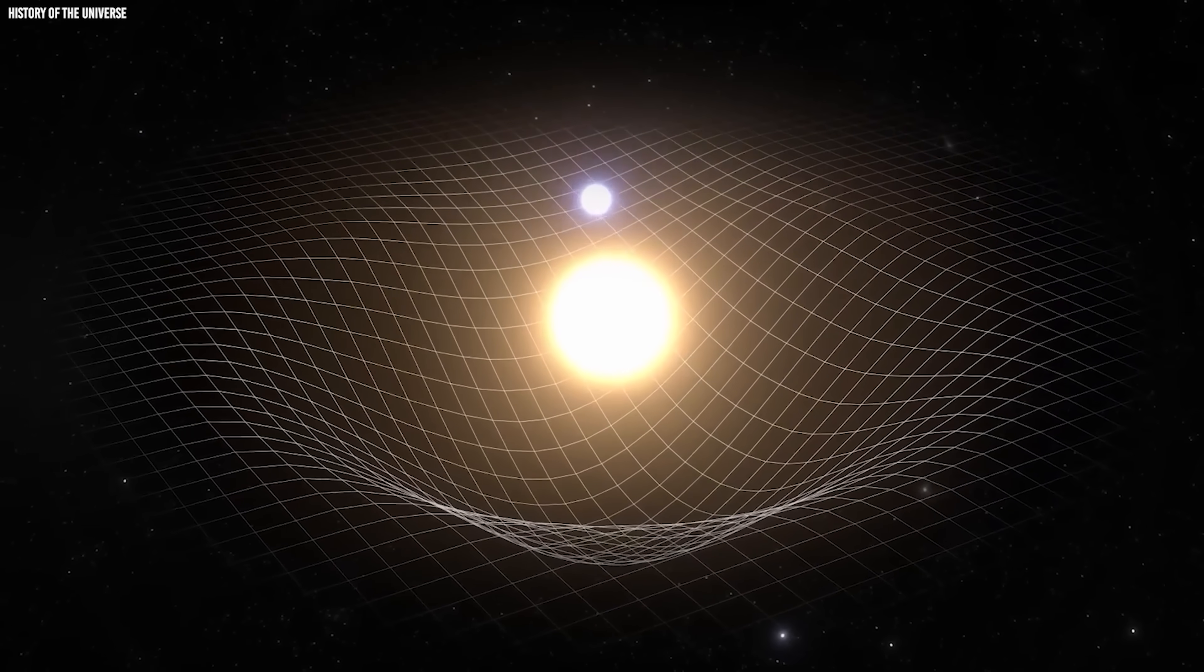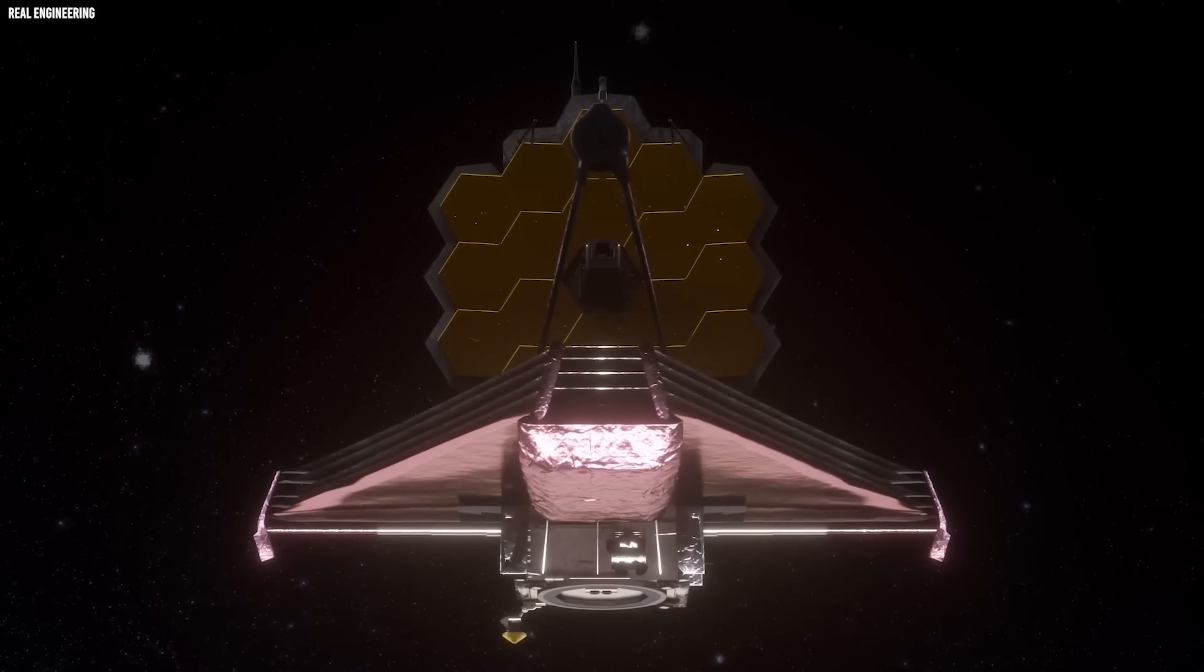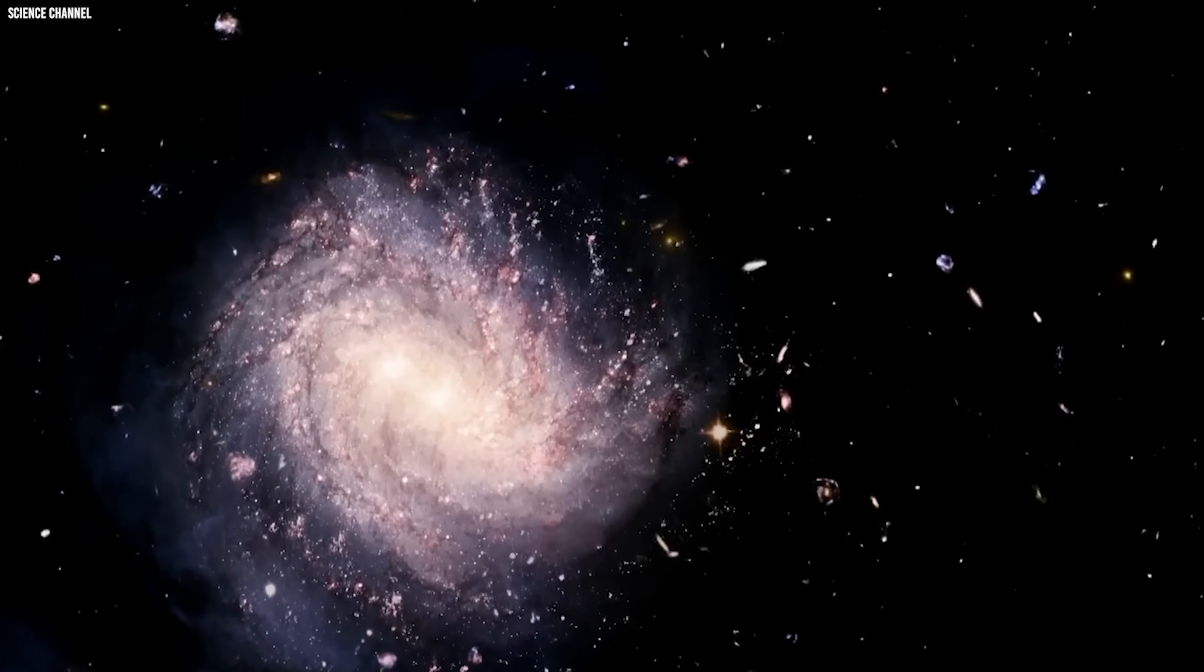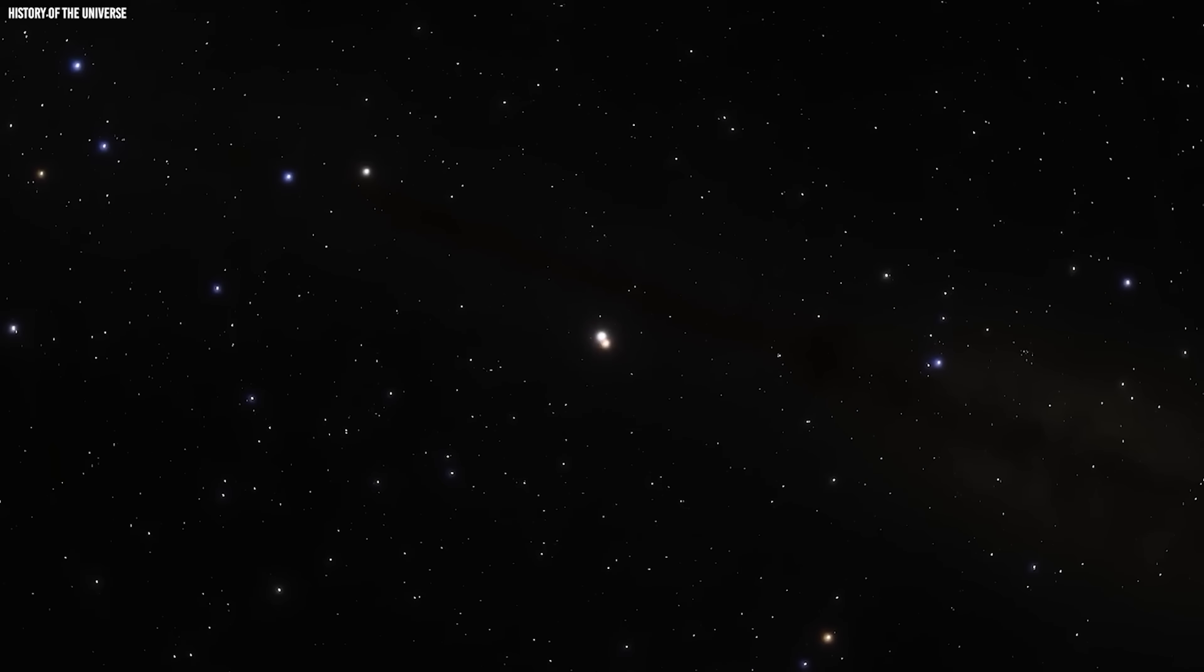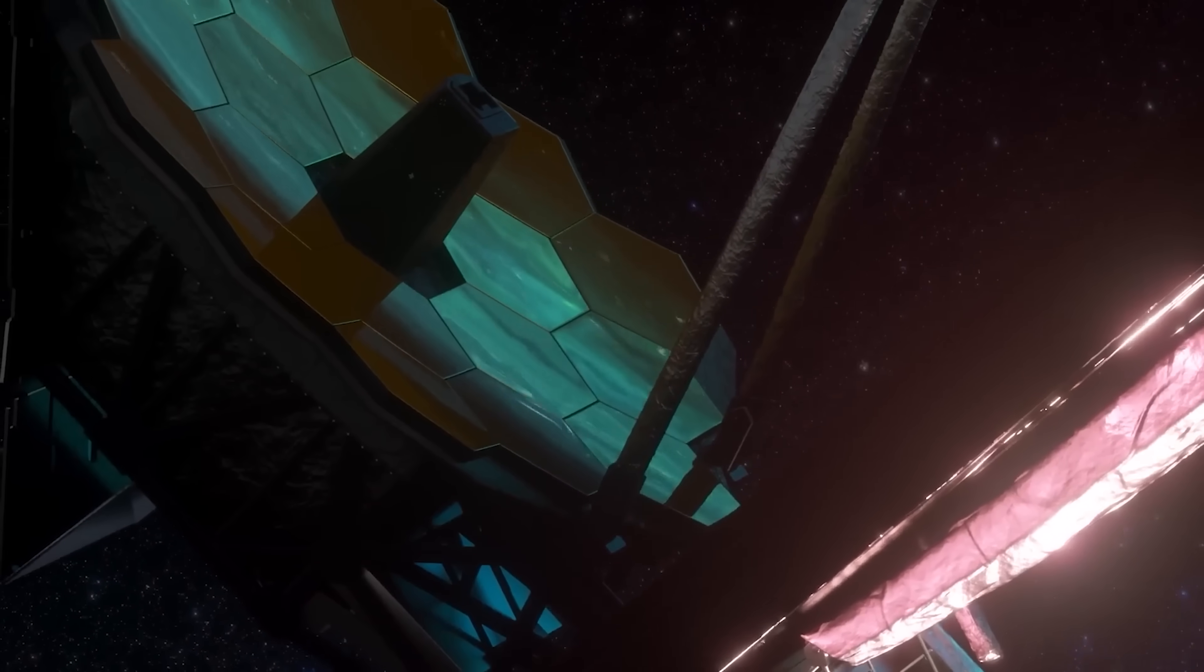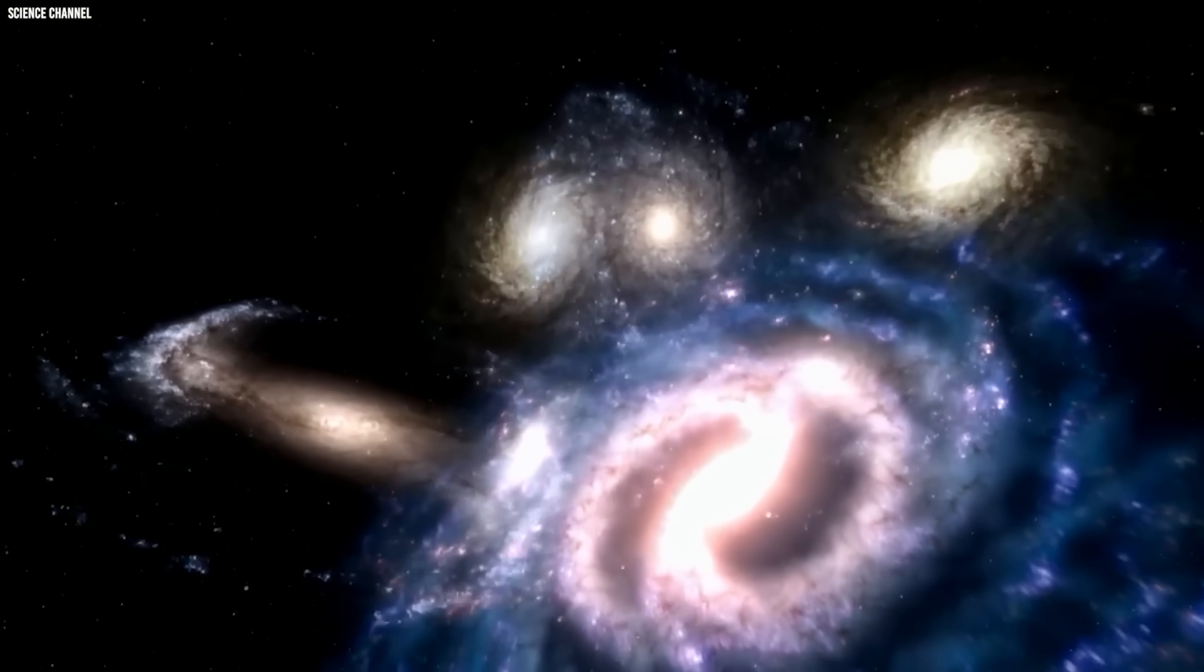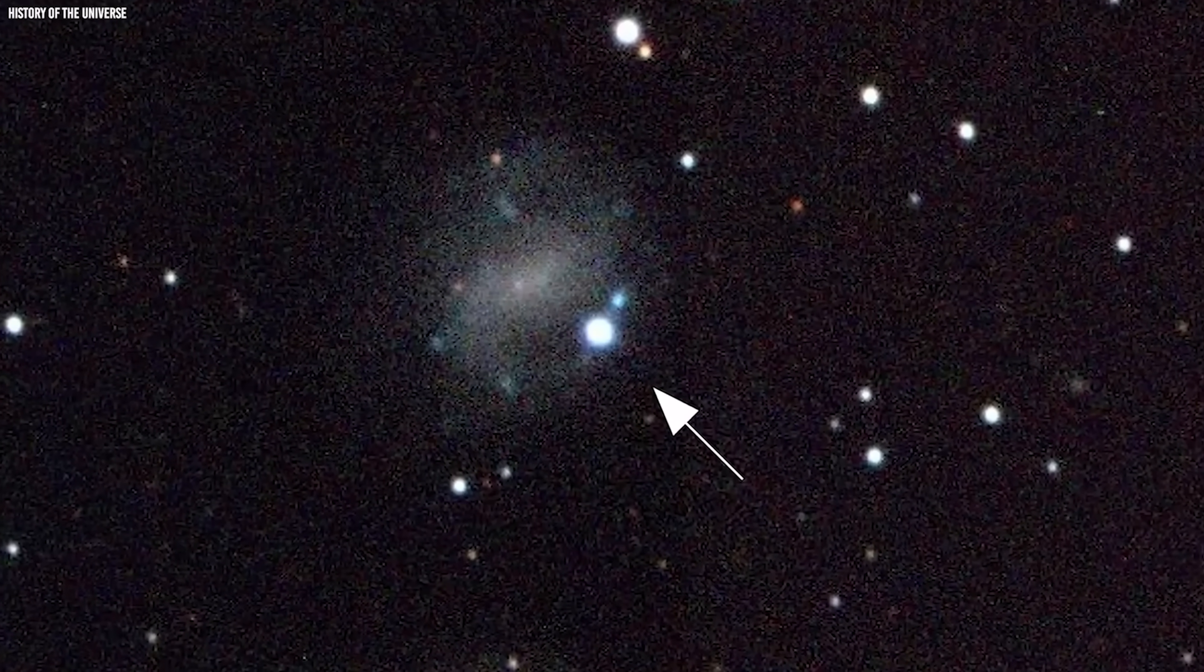What Webb is revealing at the edge of time is nothing short of paradigm shattering. Before JWST, our best models predicted that only a handful of faint, primitive galaxies should exist in this earliest era of the universe. Gravity, we believed, simply needed more time to gather matter and ignite the first stars. Instead, Webb delivered a shockwave. It has uncovered a surprising abundance of bright, massive galaxies at unimaginable distances. Records for the most distant galaxy have fallen one after another.